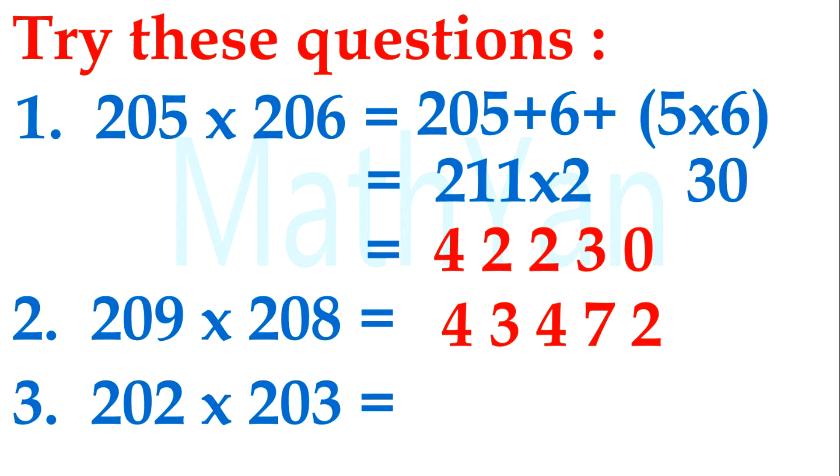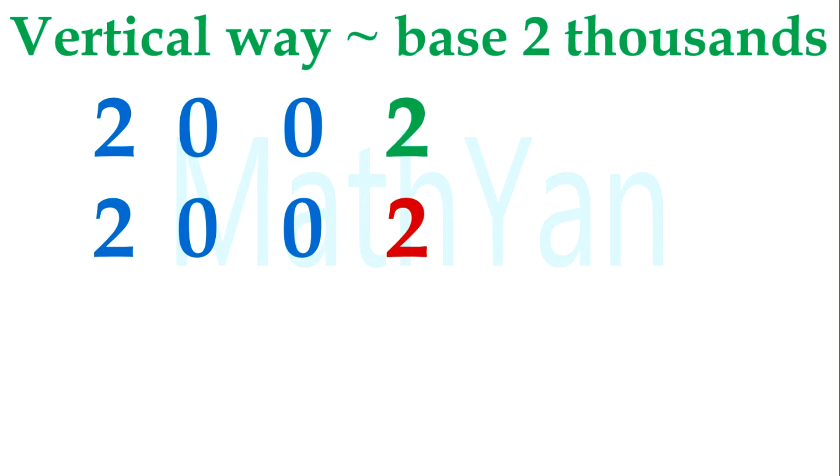Okay, 202 times 203. 202 plus 3 is 205. 205 times 2, 410. 2 times 3 is 6. So it's 206. So it's 41006.